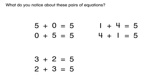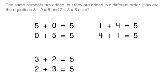What do you notice about these pairs of equations? The same numbers are added, but they are added in a different order. How are the equations three plus two equals five and two plus three equals five alike?